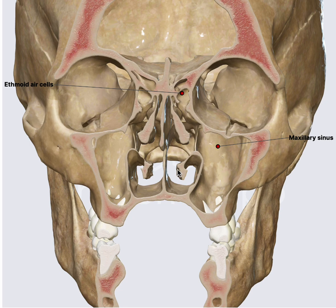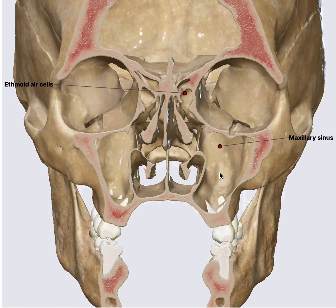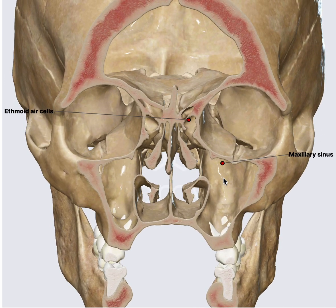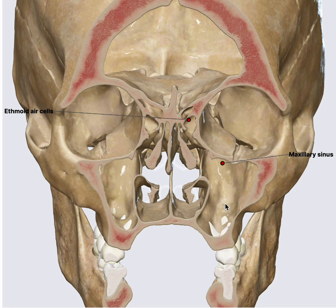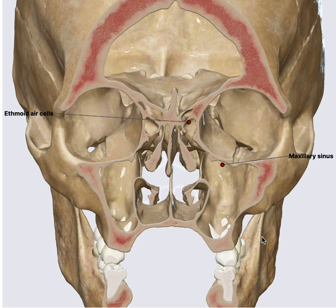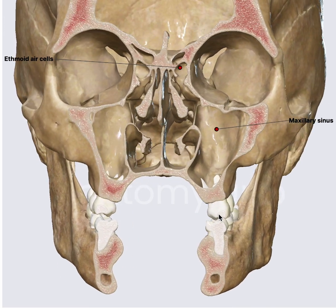Now looking into the sinuses. The first and most common basic sinus we all know is the maxillary sinus — quite a big sinus. This app allows us to understand the floor. Look at the floor — you can see the teeth projecting inside. That's why whenever anyone has dental caries or a poor dental extraction they can form an oroantral fistula. This is one more reason why our CT scan should include the floor of the maxillary sinus, as it allows us to understand the pathology.